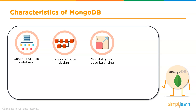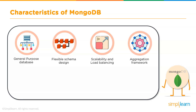Next up is scalability and load balancing. MongoDB is built to scale both vertically, but most importantly horizontally, using sharding. An architect can share load between different instances and achieve both read and write scalability. Load balancing happens automatically and transparently to the user via the shard balancer.